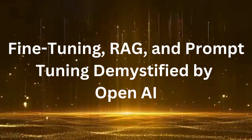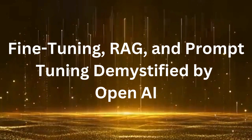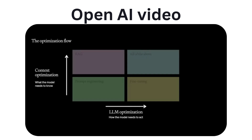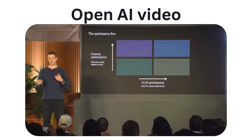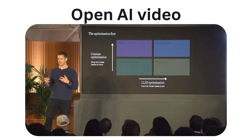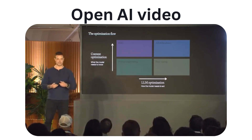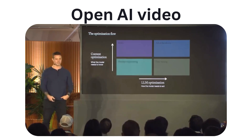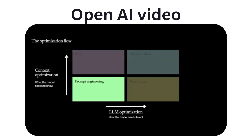Here is an OpenAI video which explains which option to pick based on your requirements. There are two axes you can optimize on: context optimization — what does the model need to know to solve your problem? — and LM optimization — how does the model need to act, and what method or action does it need to carry out? A typical flow starts in the bottom left with prompt engineering, which lets you do both, though it doesn't scale as well. Prompt engineering is always the best place to start — you can test and learn very quickly.